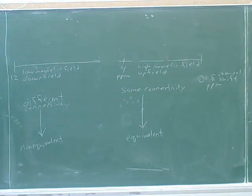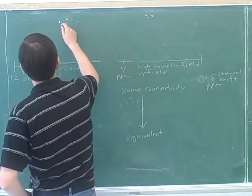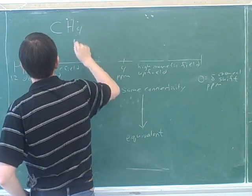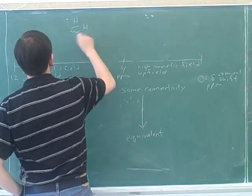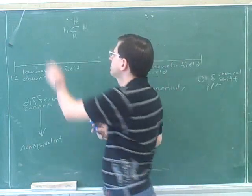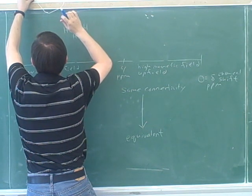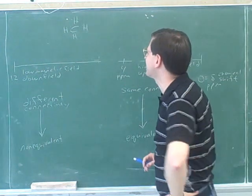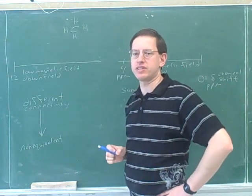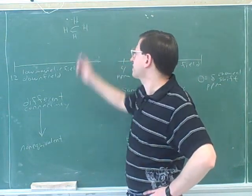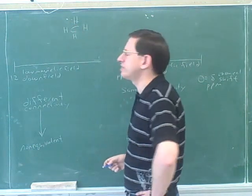We'll look at some examples to see how this works. Let's decide whether these hydrogens are equivalent or not equivalent to each other. We have to decide if they have the same connectivity or not. Do you think these hydrogens are equivalent or not equivalent? Equivalent — because they're all connected to the same carbon. So they have the same connectivity.